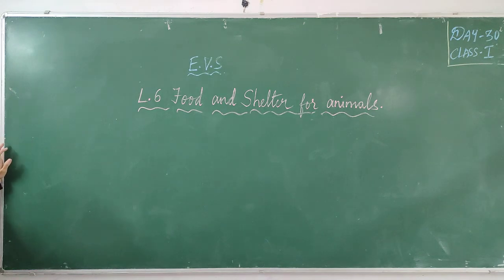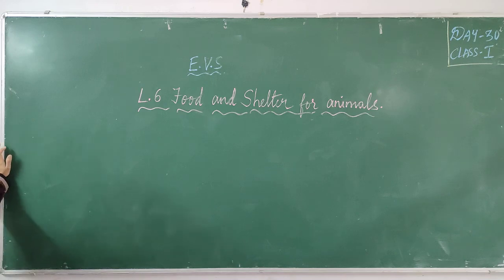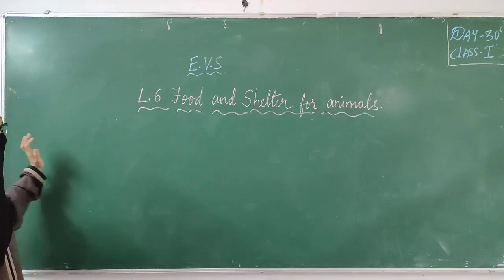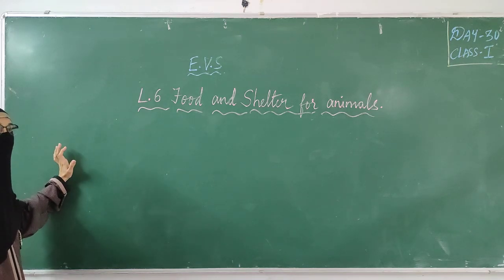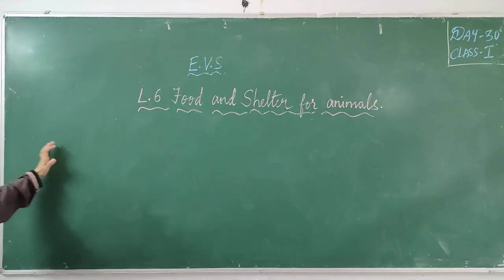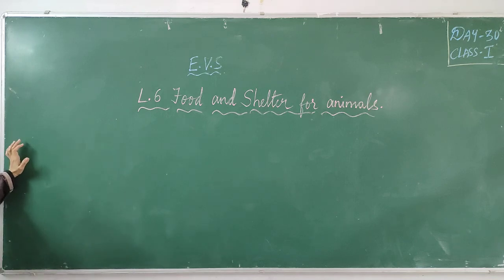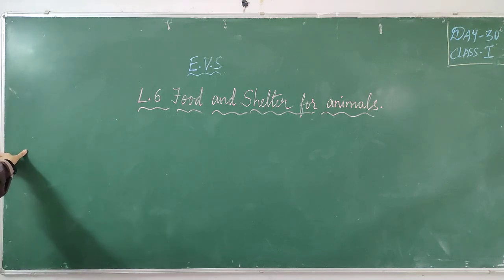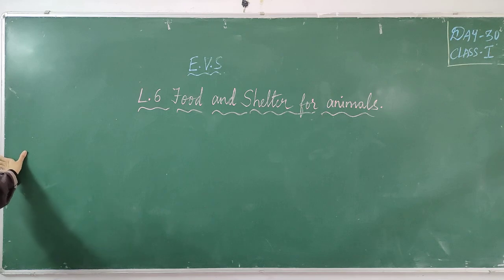Some animals eat grains. Grains are nothing but food grains. Who are these animals? Birds, hen — these are the animals which eat food grains. Some animals like frog, lizard, spider — they eat insects.